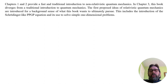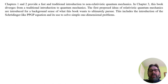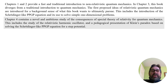Chapters 1 and 2 provide a fast and traditional introduction to non-relativistic quantum mechanics. In Chapter 3, this book diverges from a traditional introduction to quantum mechanics — the first proposed ideas of relativistic quantum mechanics are introduced for the background sense of what this book wants to ultimately pursue. This includes the introduction of the Schrödinger-like Poveda, Poirier, Grave de Peralta equation, used to solve simple one-dimensional problems.